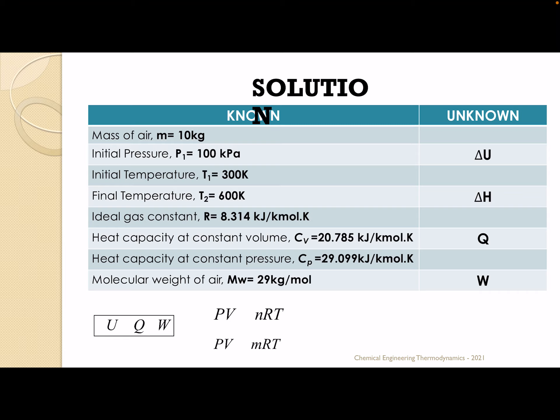What this means is that PV equals NRT. But in another instance, if those values were in kilomole per kilogram, we can equally use that formula. Another thing we'll be looking at over and over again is our first law of thermodynamics, which says that change in U equals Q minus W. That's what we'll be working with over and over.